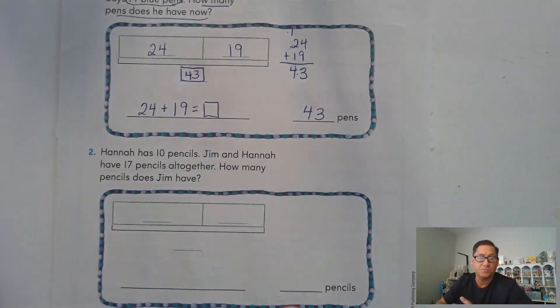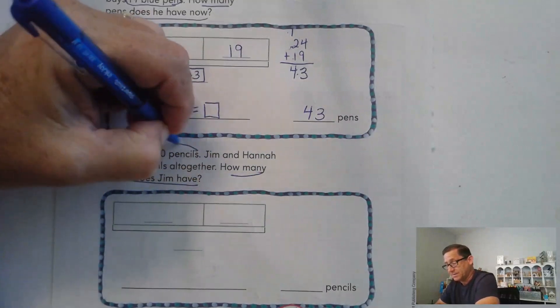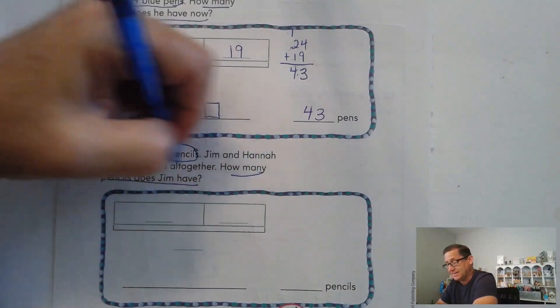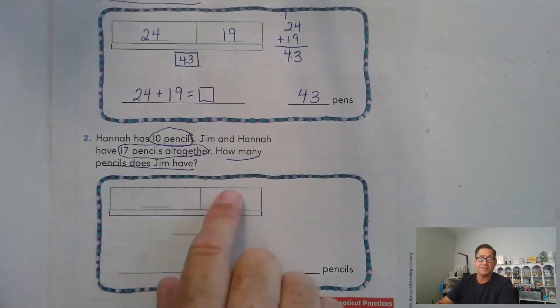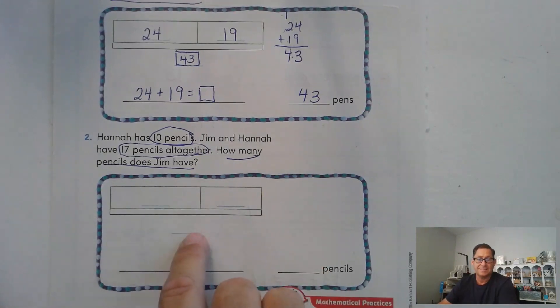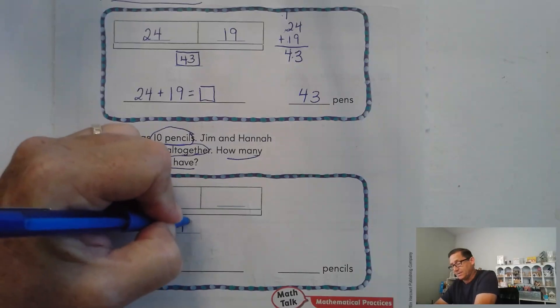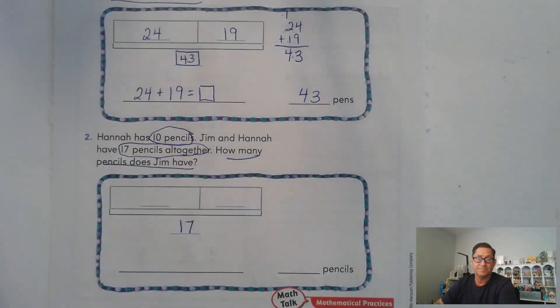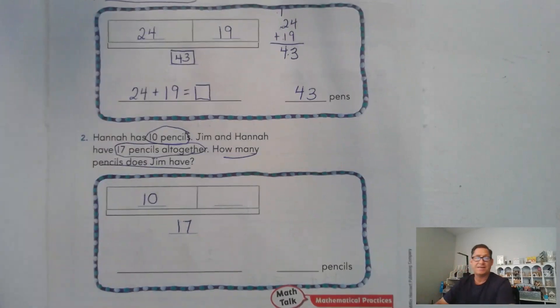Hannah has 10 pencils. Jim and Hannah have 17 pencils all together. How many pencils does Jim have? So Hannah has 10. And together, they have 17. Let's fill in the parts of this bar model. We know this box plus this box has to equal this. Well, they have 17 pencils all together. So we know the total amount. We also know Hannah's amount. She had 10.